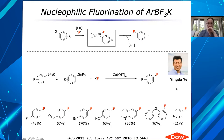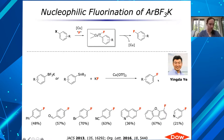Moving on to the next question: did you try Lewis acids to activate pyridine further to make a stable Meisenheimer complex? The question is around using Lewis acids to activate pyridine for stable Meisenheimer complexes.